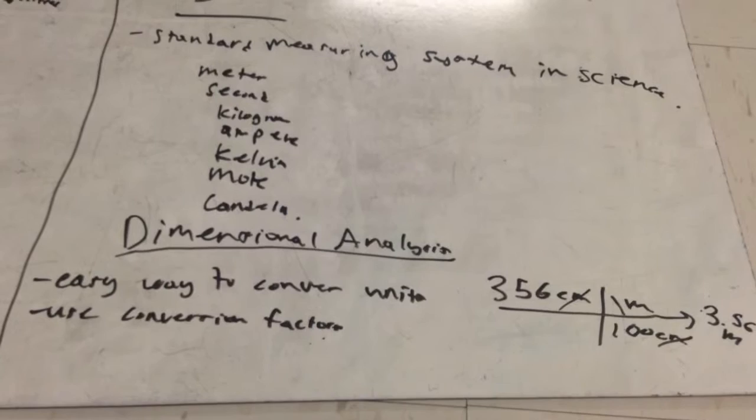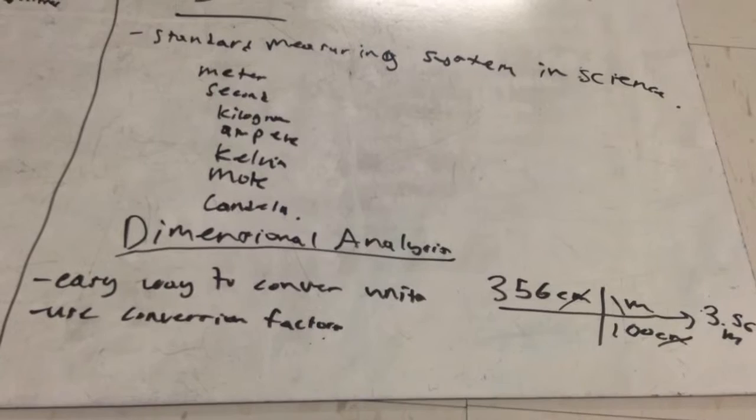An easy way to go back and forth between SI units—SI units are based on powers of 10—so an easy way to go from centimeters to meters or kilograms to grams is using dimensional analysis, which uses conversion factors.